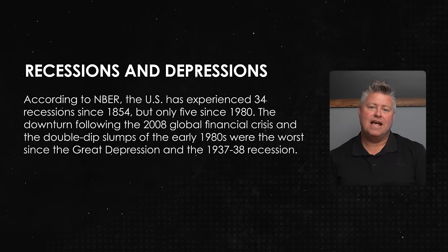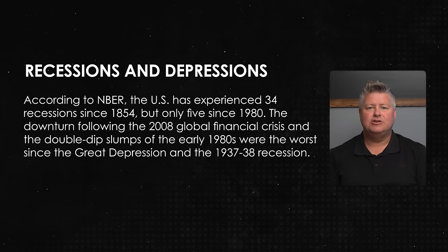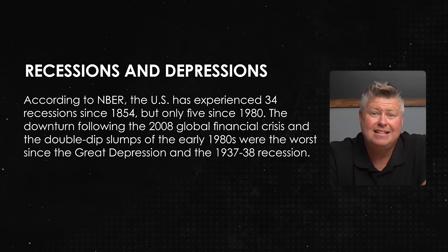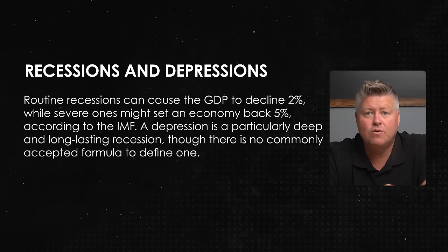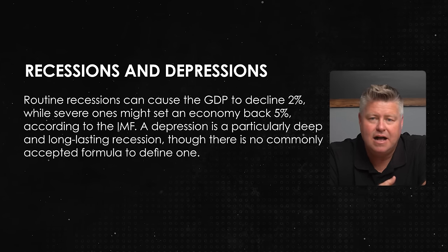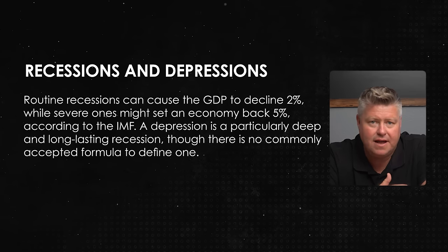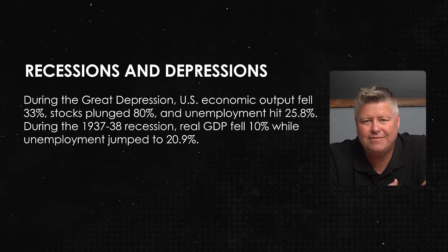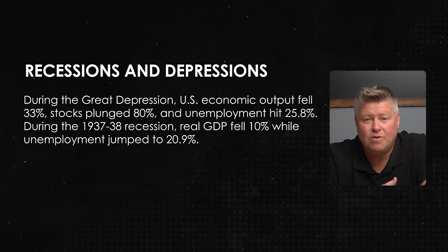Let's talk about recessions and depressions. According to the NBER, the US has experienced 34 recessions since 1854, but only five since 1980. The downturn following the 2008 global financial crisis and the double-dip recessions of the early 1980s were the worst since the Great Depression and the 1937–1938 recession. Routine recessions can cause GDP to decline 2%, while severe ones might set an economy back 5%, according to the IMF. A depression is a particularly deep and long-lasting recession with no commonly accepted formula to define one. During the Great Depression, US economic output fell 33% and stocks plunged 80%, with unemployment hitting 25.8%. During the 1937–1938 recession, real GDP fell 10% while unemployment jumped to 20.9%.